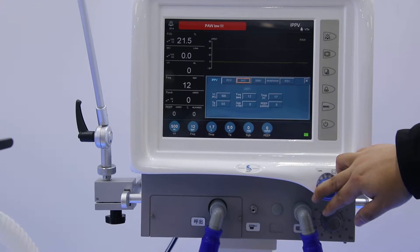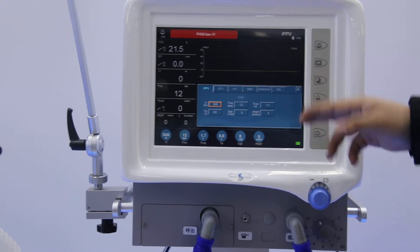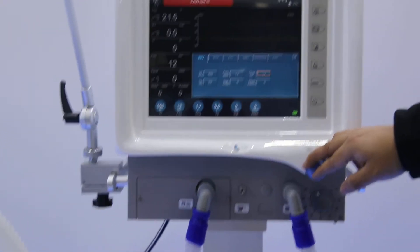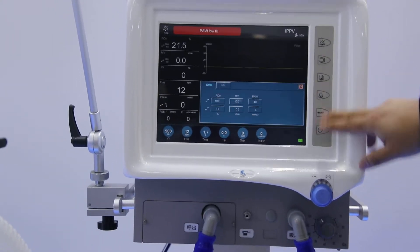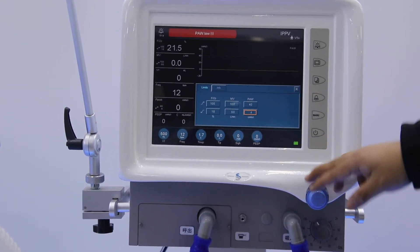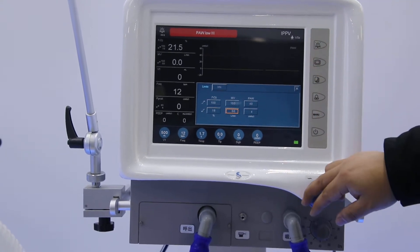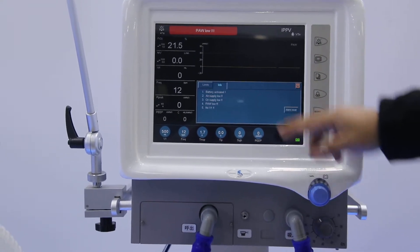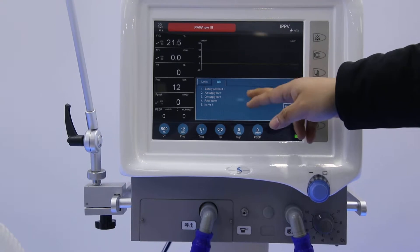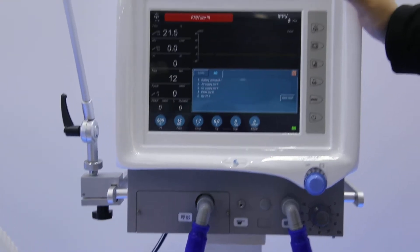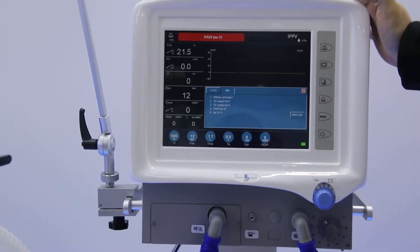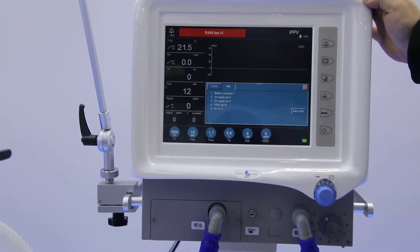The third button here is for changing the ventilation mode again when you change to another patient. The fourth one here is the alarming area. It means it will also be showing the alarms here, the history alarm. And then after several months, if the engineer comes to do the maintenance, they will know what problem caused the ventilator and we will know how to fix it.